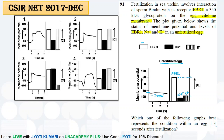कल की lecture में मैंने बताया था कि fertilization के one से three seconds बाद fast block of polyspermia देखने को मिलता है। Fast block में sodium ion egg के अंदर enter करता है, यानि sodium का concentration बढ़ जाएगा। साथ ही membrane potential positive की तरफ shift होगा — plus 20 millivolt तक shift कर जाएगा।